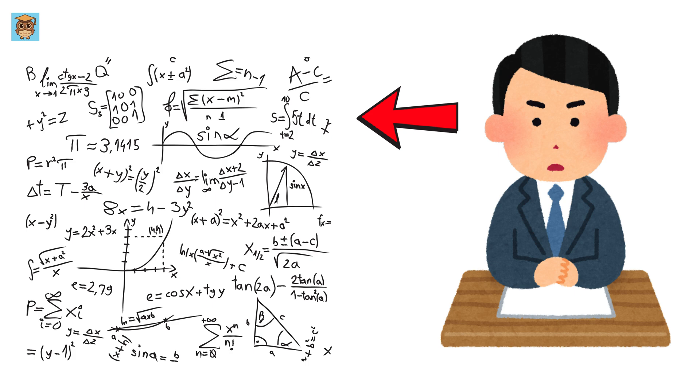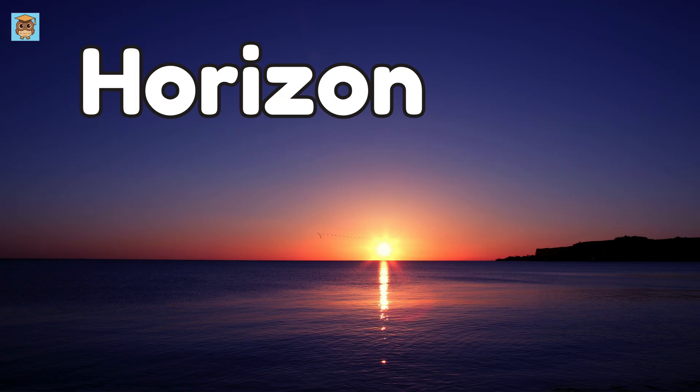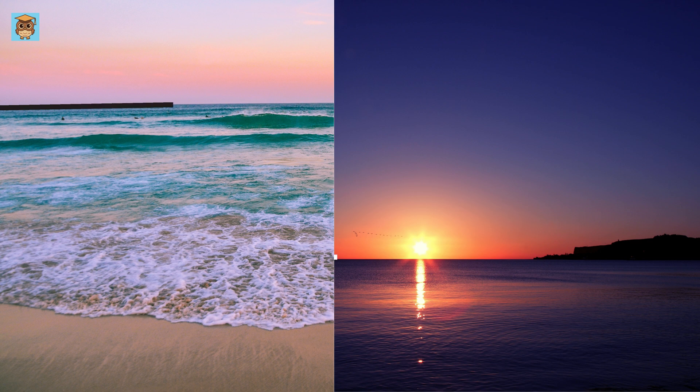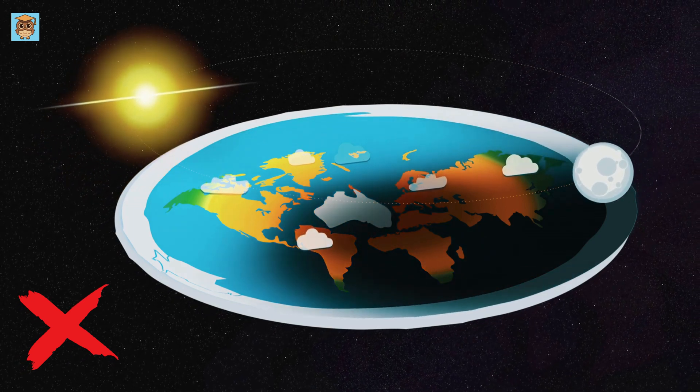But before we get into math, let's understand what the horizon is. The horizon is the line where the Earth's surface seems to meet the sky. But here's the catch. The Earth isn't flat. It's a giant sphere.